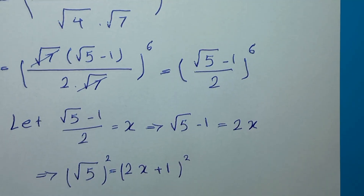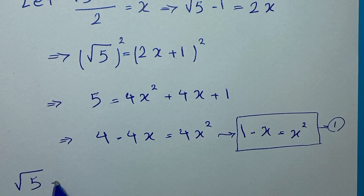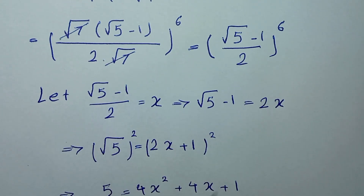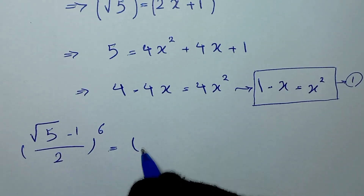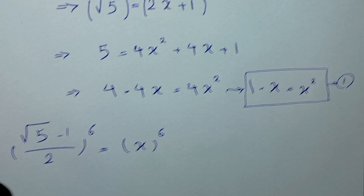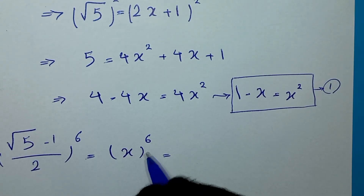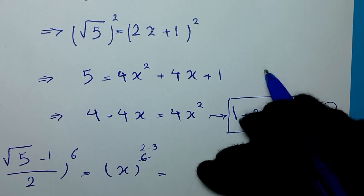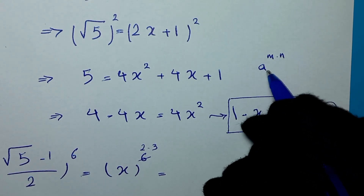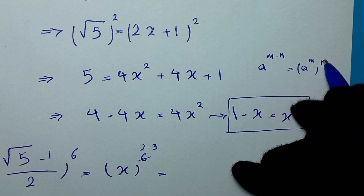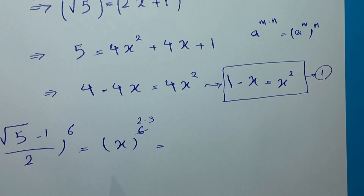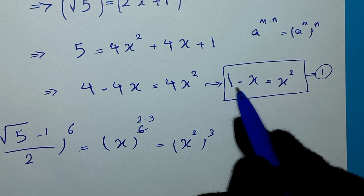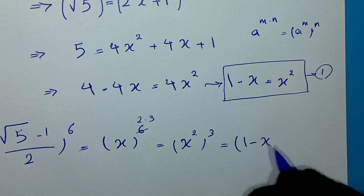We want to find the value of (√5 minus 1)/2 to the power of 6, which equals x to the power of 6. Since 6 equals 2 times 3, and using the rule a^(m·n) = (a^m)^n, we can write x⁶ as (x²)³. Since x² equals 1 minus x, we write this as (1 minus x)³.